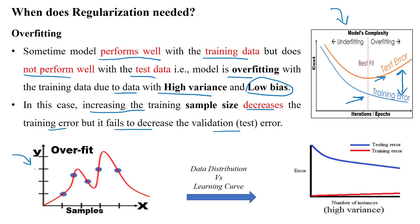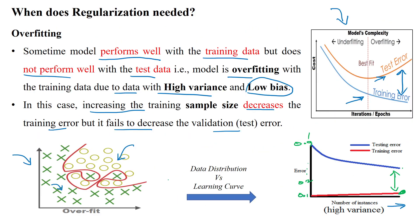For the regression algorithm, the regression line is learning the patterns perfectly over the training dataset. As the number of samples increases, this gives less training error — almost close to 0, around 0.1 or 0.2 — while the testing error remains very high, around 0.9 or 1. This provides high variance. Similarly, when using classification, the classification data also shows overfitting.